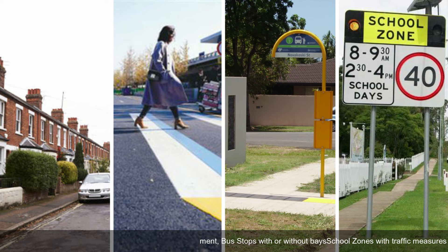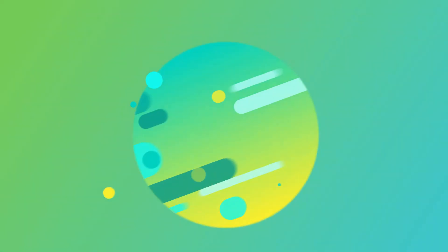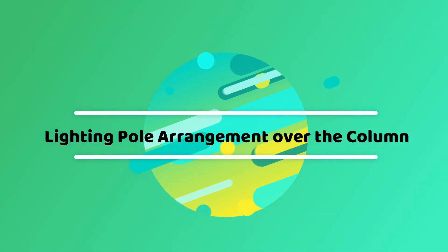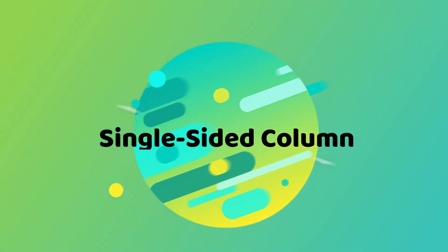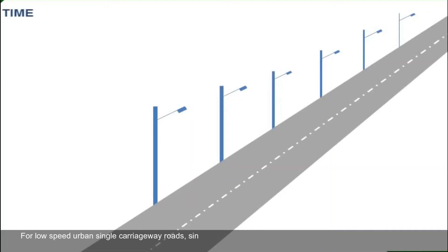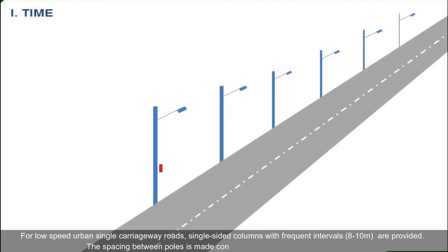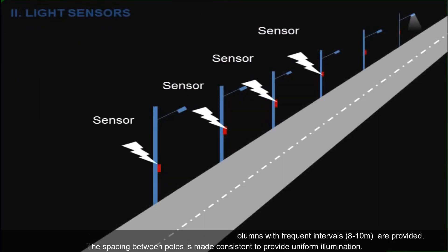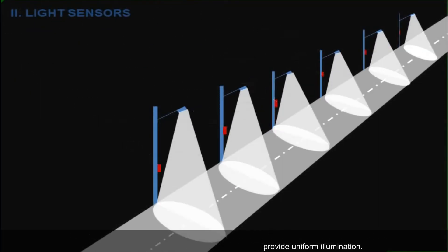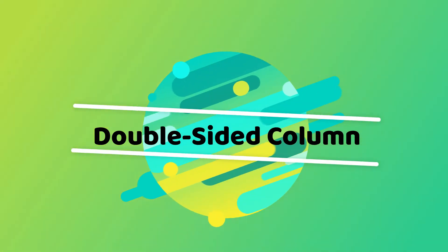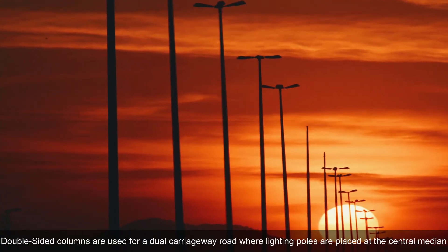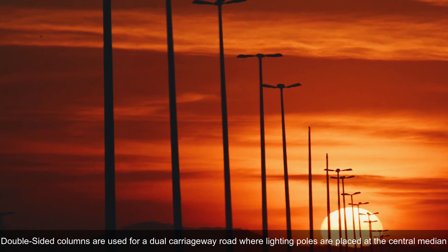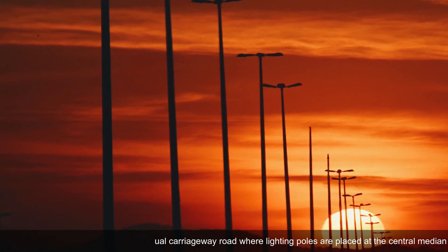Regarding lighting pole arrangement, single-sided columns are used for low-speed urban single-carriageway roads, with frequent intervals of 8 to 10 meters. The spacing between poles is kept consistent to provide uniform illumination. Double-sided columns are used for dual-carriageway roads, where lighting poles are placed at the central median.